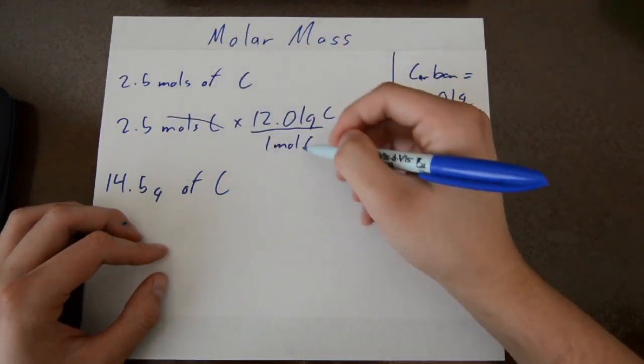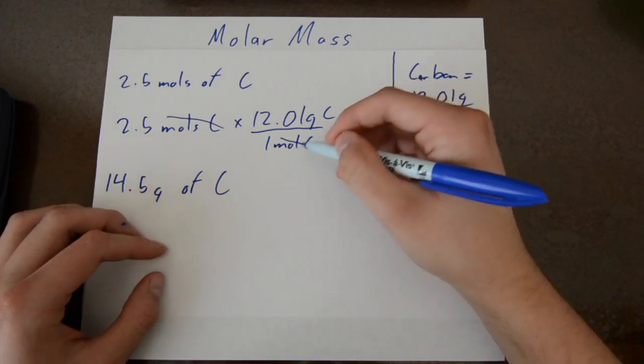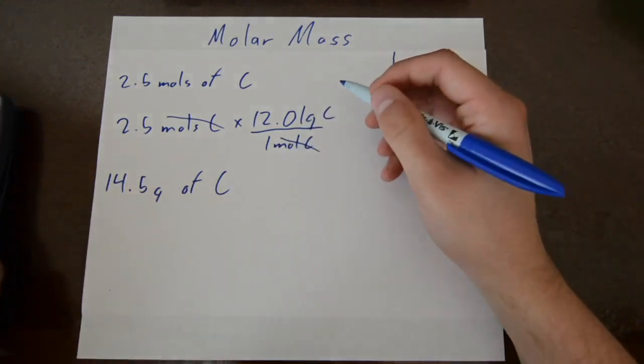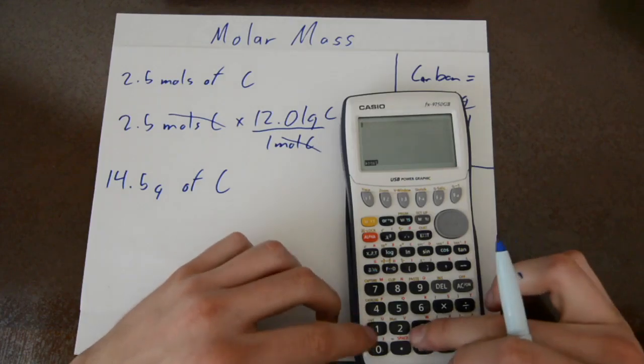So here we have the units, moles of carbon cancel out and you are left with grams. So then you just plug that into your calculator.